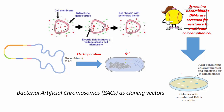Blue color colonies indicate that DNA has not been transformed into bacterial cells, while white colonies indicate that bacterial cells have been transformed with the recombinant BAC vector.